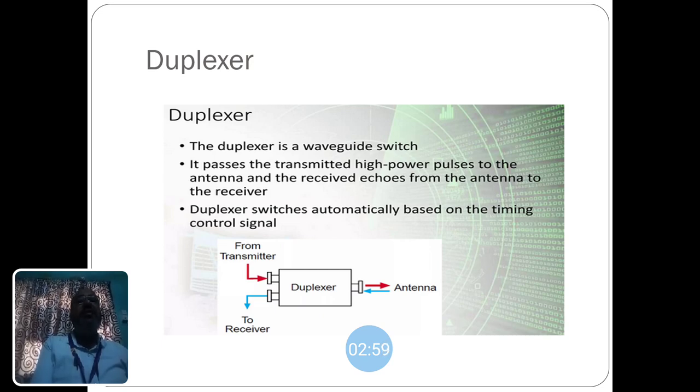It passes the transmitted high power pulses to the antenna and receives the echoes from the antenna to the receiver. After receiving, the duplexer switches automatically based on the timing control systems.